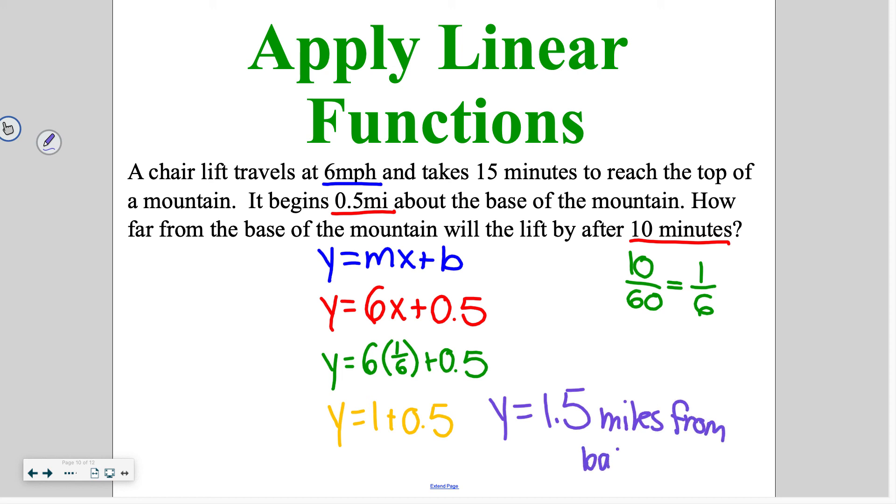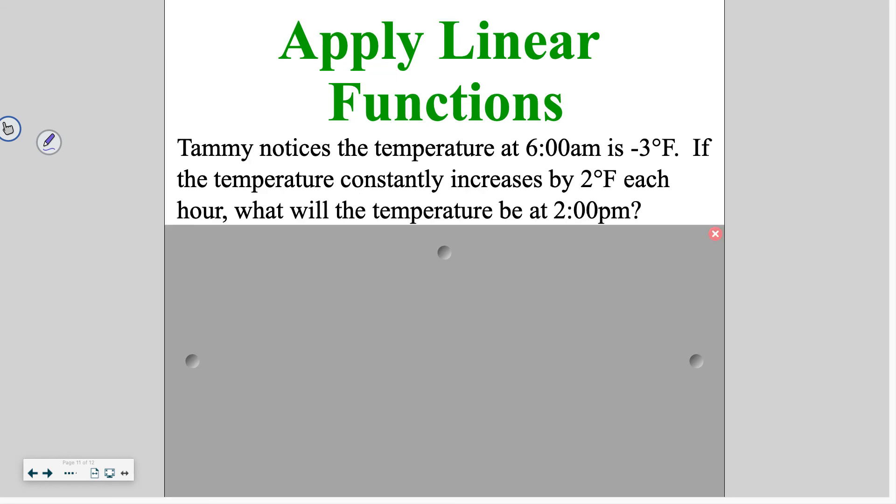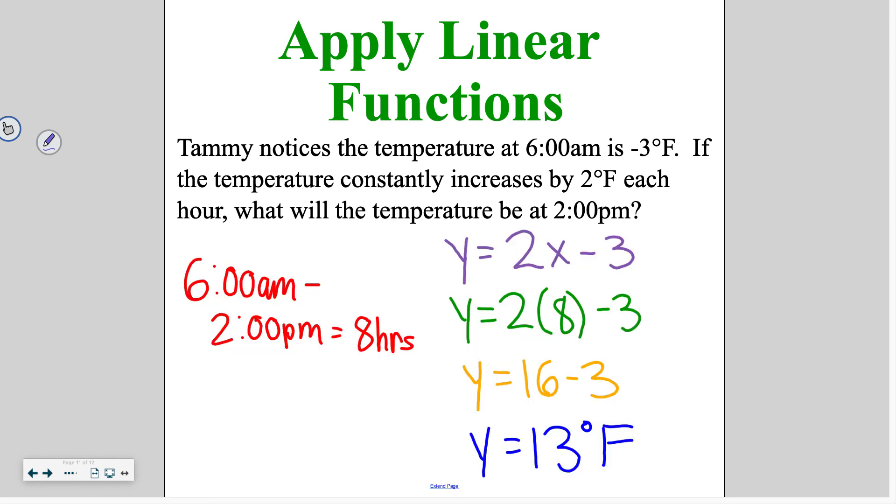So again, write your equation, pay attention that you are using the information in its correct units, miles per hour, needed to change our minutes into fractions of an hour, and then be able to solve the problem. Go ahead and try this one on your own. For this one, we've got a starting point of negative 3 degrees, and we're going up by 2 degrees each hour. From 6 a.m. to 2 p.m., that's 8 hours. Those are already matching units, so I can just plug in 8, and I end up with 13 degrees Fahrenheit.